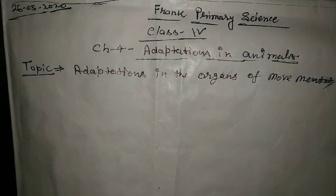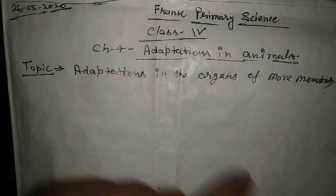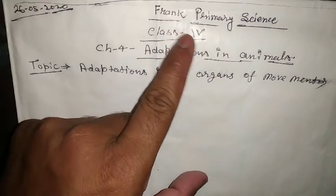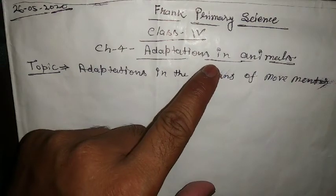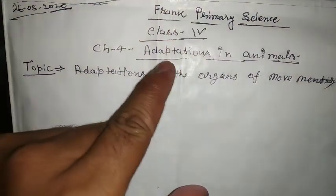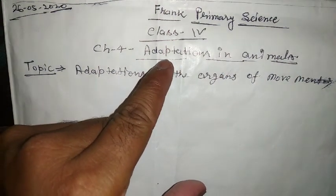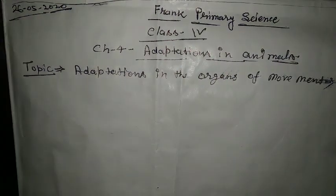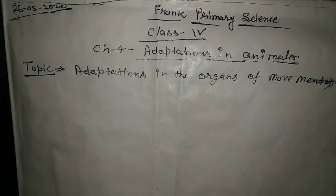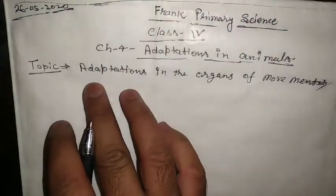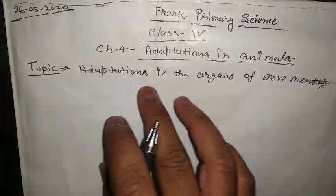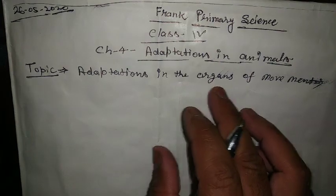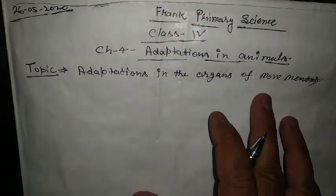Hello students. Frank Primary Science, Class 4, Chapter 4: Adaptations in Animals. Topic: Adaptations in the Organs of Movement.